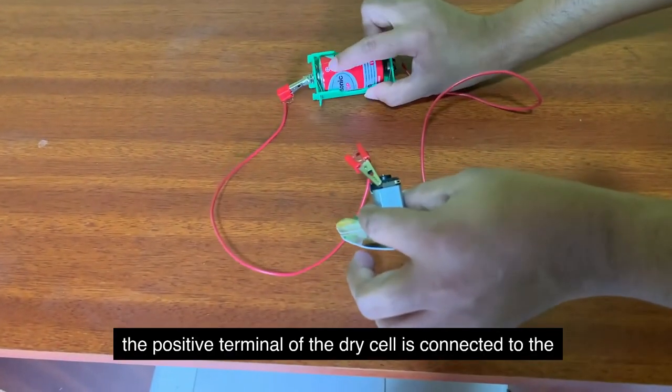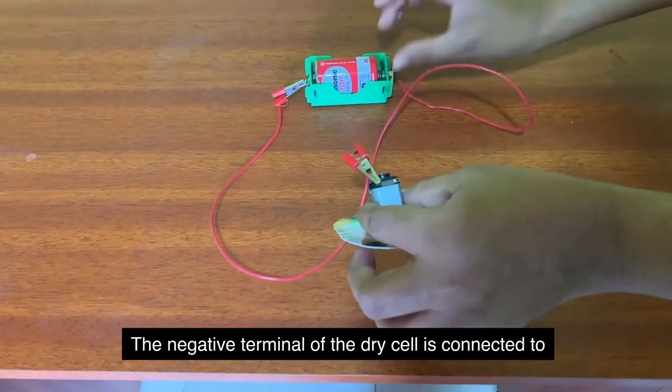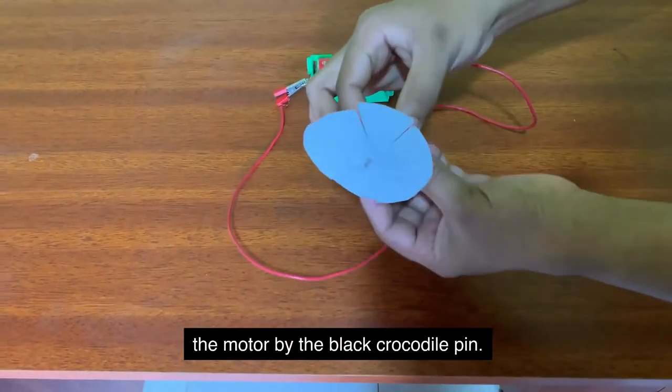The positive terminal of the dry cell is connected to the motor by the red crocodile pin. The negative terminal of the dry cell is connected to the motor by the black crocodile pin.